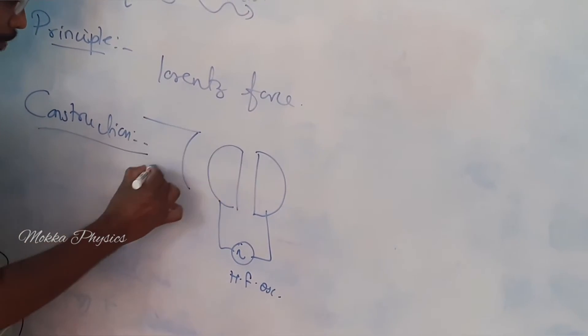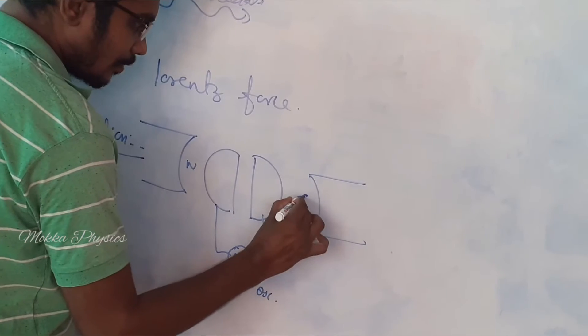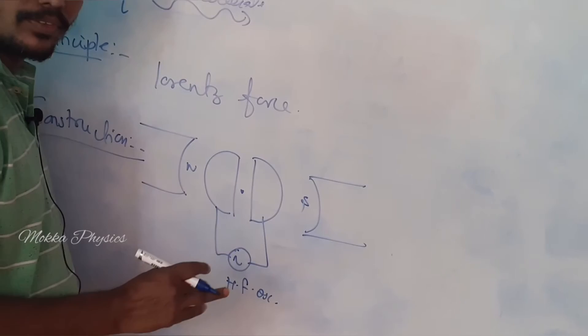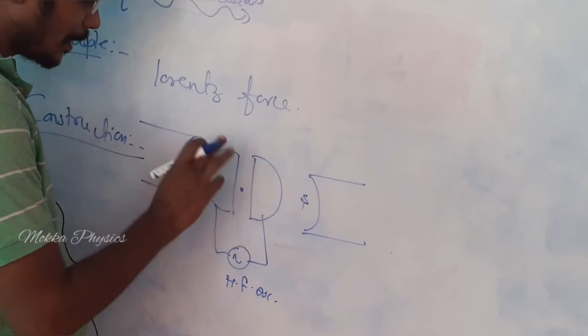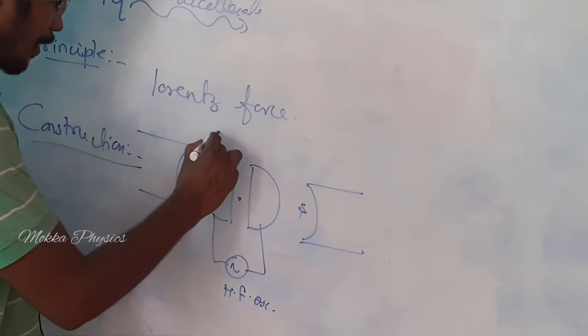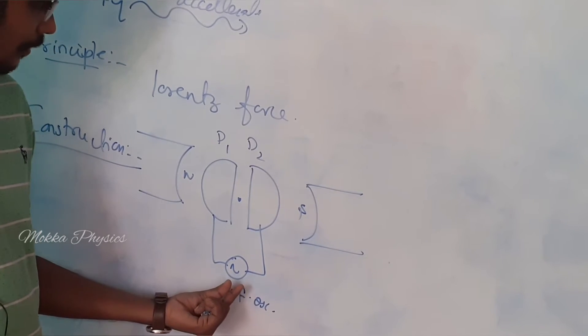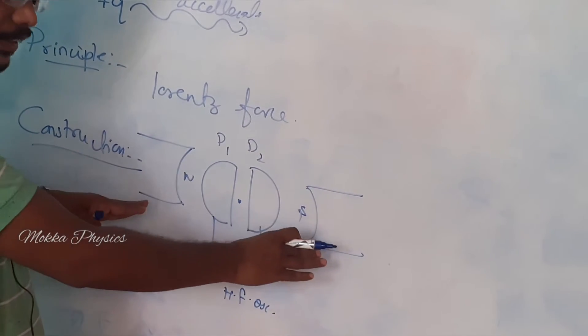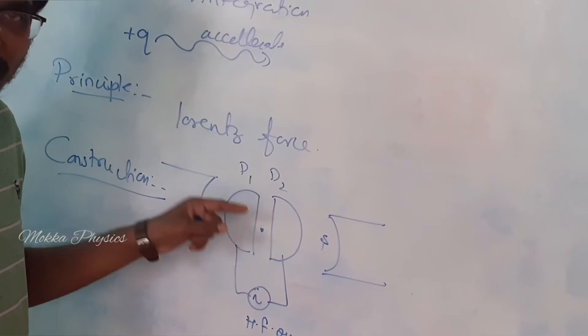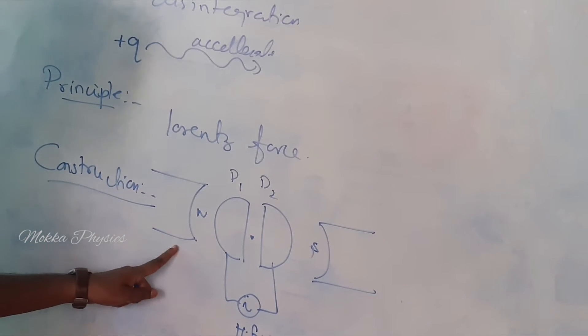The whole set-up has to be placed in the presence of a uniform magnetic field. We have two metallic plates in the shape of D, D1 and D2. They are connected to a high frequency oscillator. The whole set-up has to be placed in the presence of a uniform magnetic field. A source of positive ion has to be placed at the center. Clear? This is how you can explain the construction.